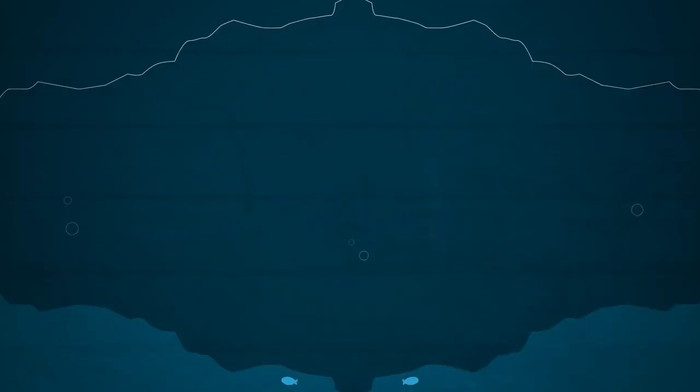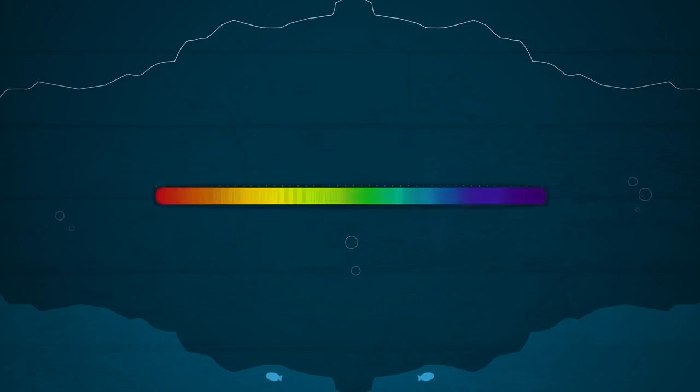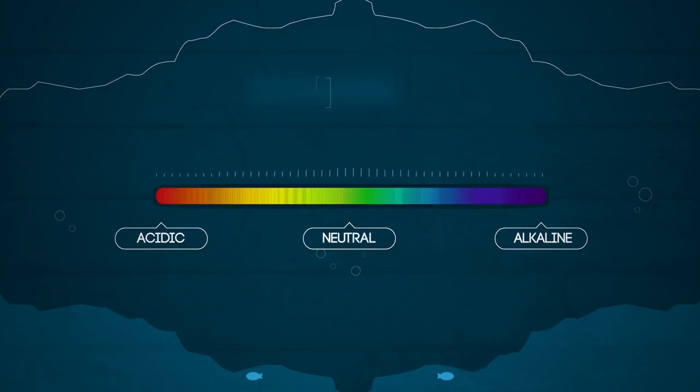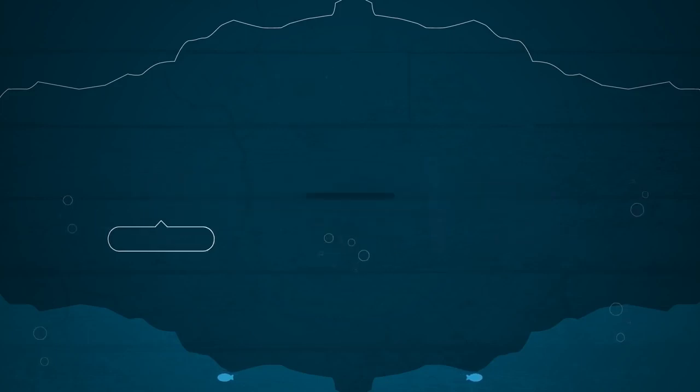In other videos, we have seen what makes something acidic, neutral, or alkaline. We can tell if something is acidic, alkaline, or neutral by using an indicator. Indicators are substances that show different colors when they are in acidic or alkaline conditions.